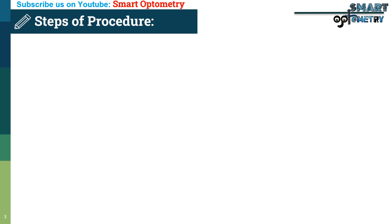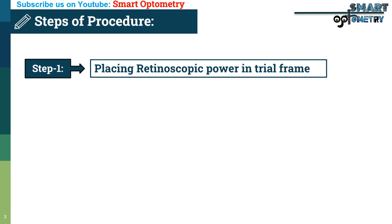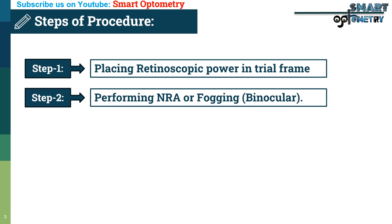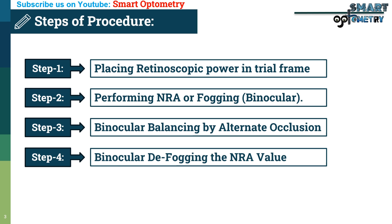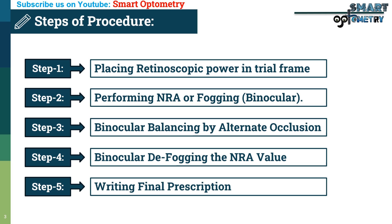Steps of the procedure: Step 1 — placing retinoscopic power in the trial frame. Step 2 — performing negative relative accommodation or fogging. Step 3 — binocular balancing by alternate occlusion. Step 4 — binocular defogging of NRA. Step 5 — writing the final prescription.